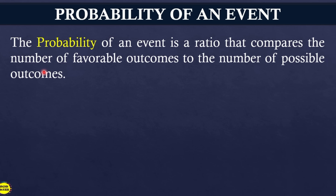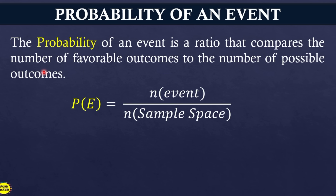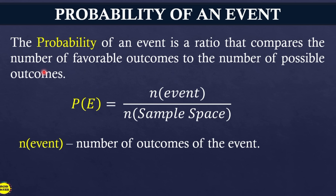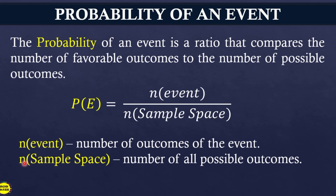So isa lang yung makukuha natin dyan. The ratio we use to compute the probability of a simple event is the number of events divided by the number of sample space — that is, n(E) divided by n(S). That is why in the previous video lesson on the basic concept of probability, dapat malinaw na sa inyo ang pagkuha ng sample space at ng event. The number of outcomes of the event is represented as the numerator, and n(S) — the number of all possible outcomes — is the denominator.